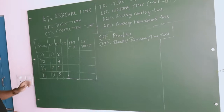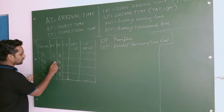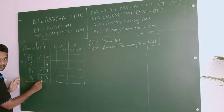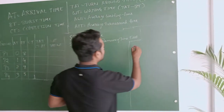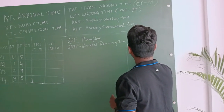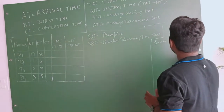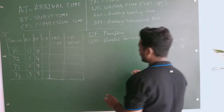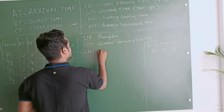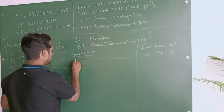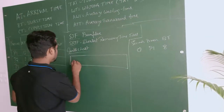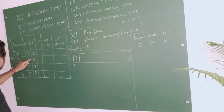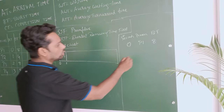Consider there are four processes with arrival times as given. Whenever arrival time is given, every time the first process executes until your second process arrives, then you check the shortest time, and repeat this until the last process. After that, you go with non-preemptive. At 0 seconds, only P1 can execute. P1 executes for 1 second — until the second process arrival time of 1 second. After executing 1 second, remaining burst time for P1 is 7.